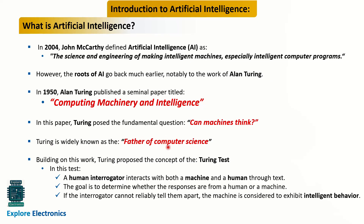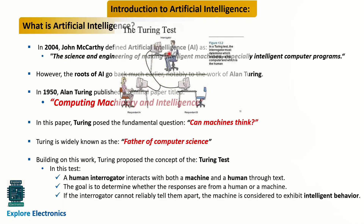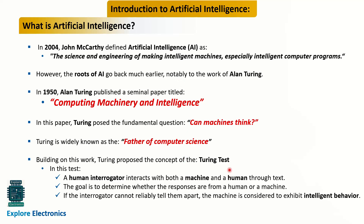From that point onwards, machine thinking and machine learning concepts started to evolve. Turing is widely known as the father of computer science. He proposed the Turing Test: a human interrogator interacts with both a machine and a person. The goal is to determine whether responses come from a human or a machine. If the interrogator cannot tell them apart, the machine is considered to be executing intelligent behavior similar to a human.